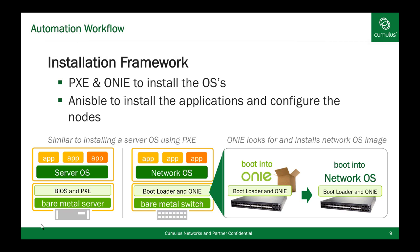One of the big things Cumulus Linux brings is that we are Linux. This allows you to have a consistent automation workflow, just as you're running on servers with BIOS and PXE to install your server OS. We have the bootloader depending on the hardware platform and then ONIE to pick and install the operating system you want. Once ONIE has installed the operating system, Cumulus Linux starts up just like any Linux operating system, and you can then leverage the automation tool of your choice to install configurations, additional services, and additional applications you may need on top of your platform.